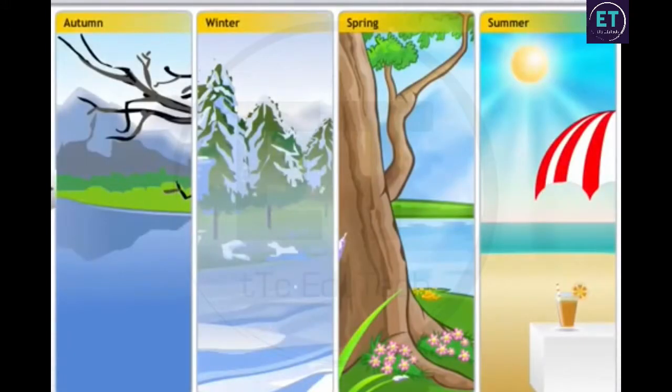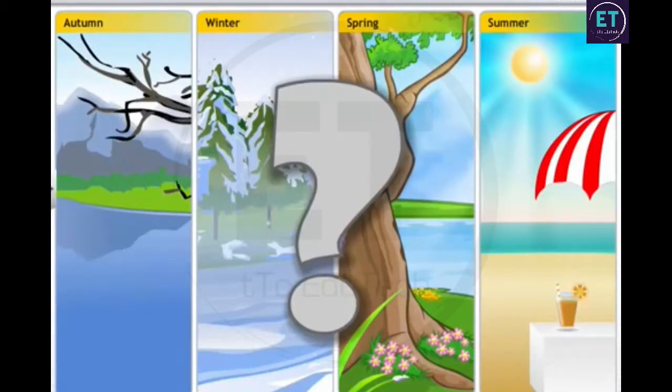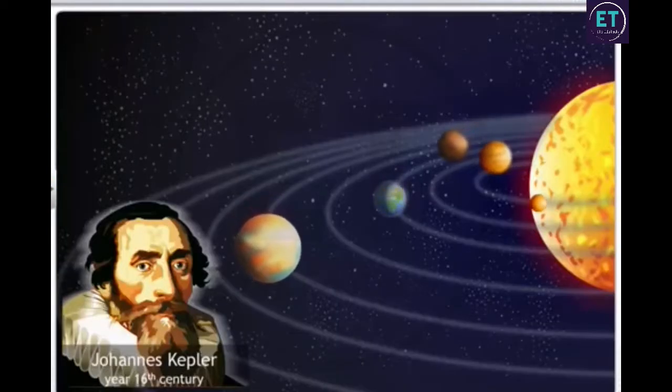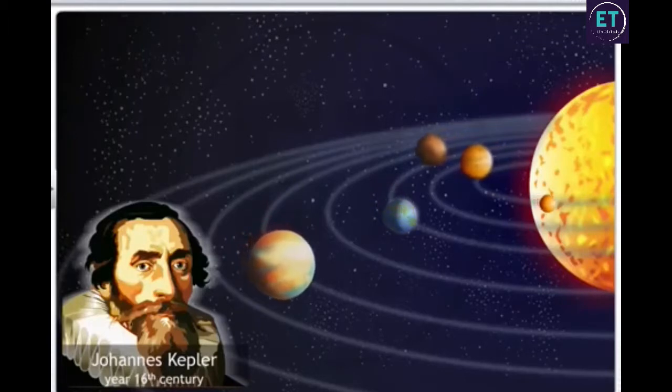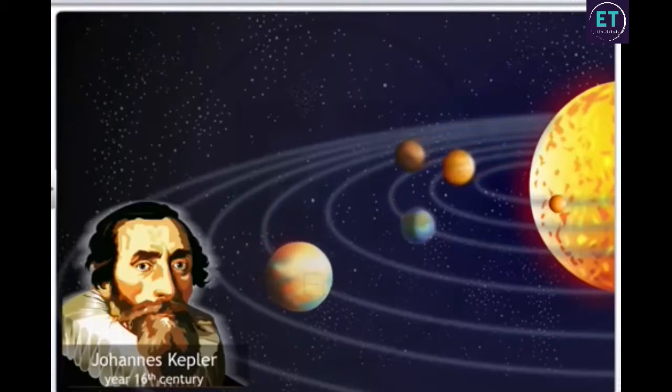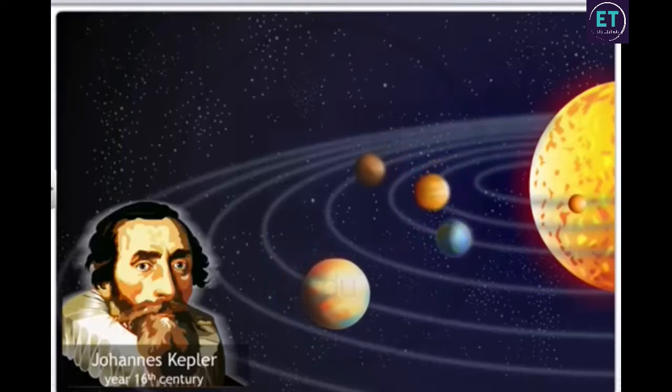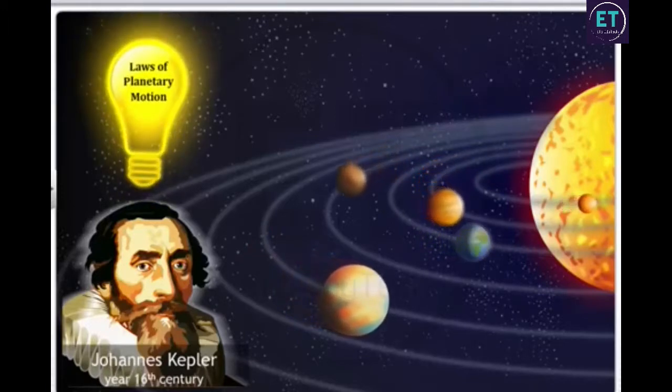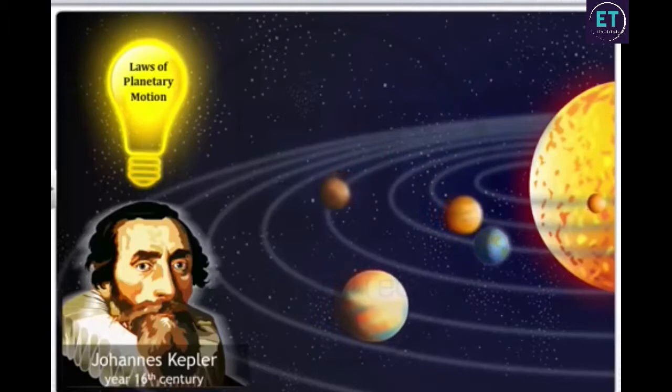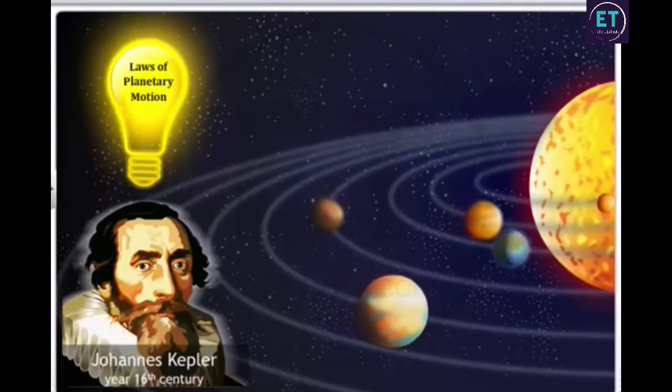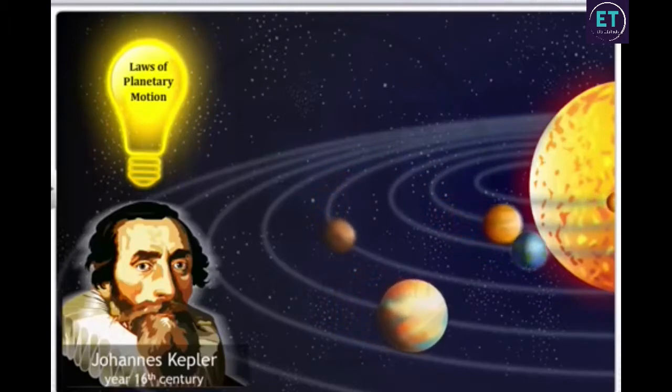However, neither of these models could explain the variations in seasons or the lengths of days over the year. Finally, Johannes Kepler, a German mathematician, astronomer, and astrologer, in his laws of planetary motion explained that planets revolve around the sun in elliptical orbits.